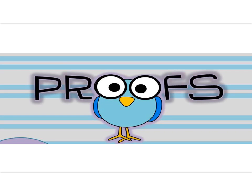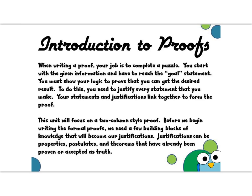So we will continue using our inductive reasoning skills — in other words, we will make some observations in order to learn more about proofs. As we continue our introduction to proofs, just think of writing a proof as your job being to complete a puzzle. You start with the given information and have to reach the goal statement. You must show your logic to prove that you can get the desired result. To do this, you need to justify every statement that you make. Your statements and justifications link together to form the proof.